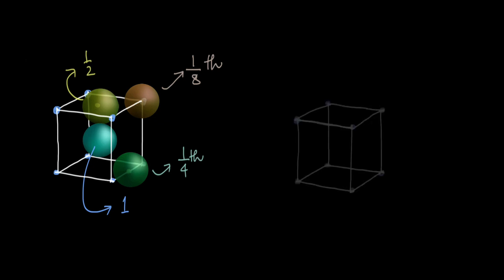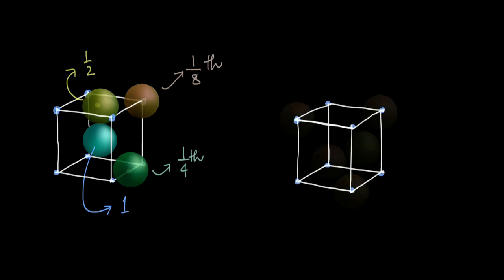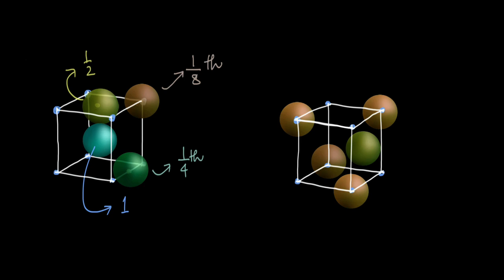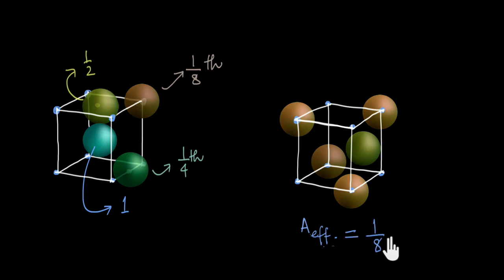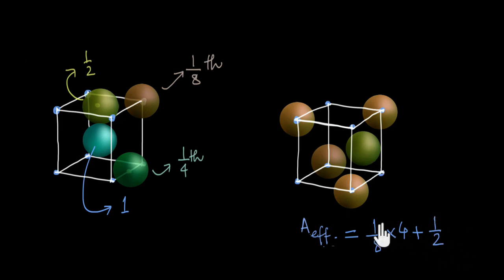Let us say we have a cubic unit cell with four atoms at the corners and one at a face center. We know only one-eighth of each corner atom is within the unit cell, and there are four such corners: (1/8) × 4. The face-centered atom is 50% inside: plus 1/2. Doing the math, A_effective = 4/8 + 1/2 = 1. This unit cell can be thought of as effectively having one whole sphere inside it.